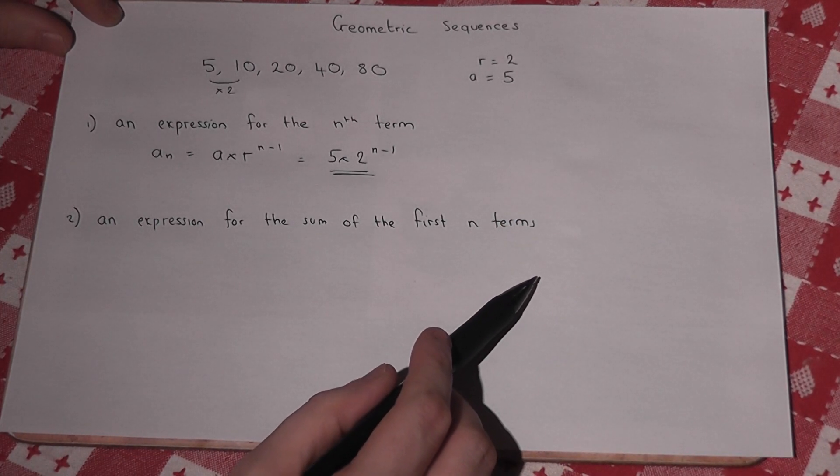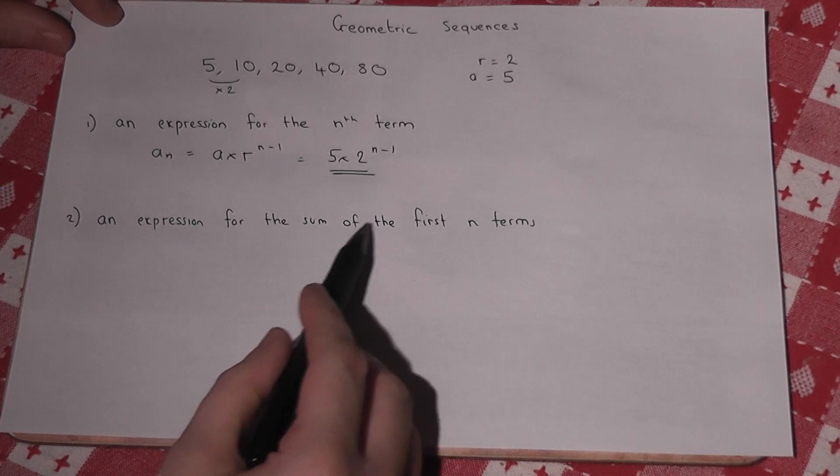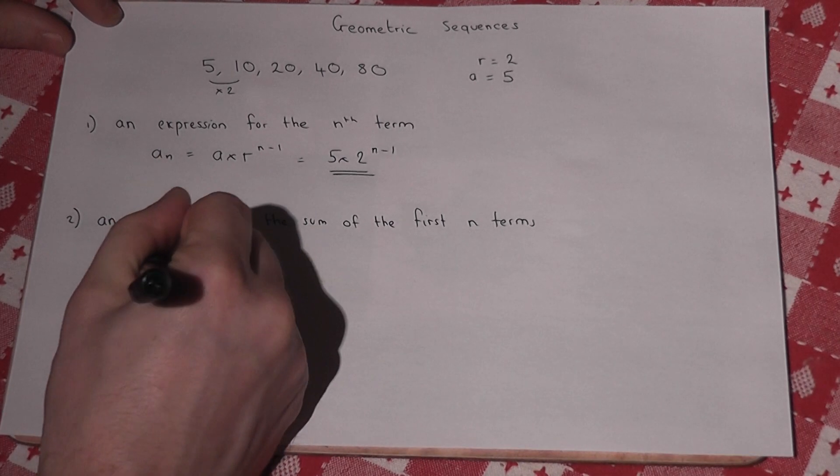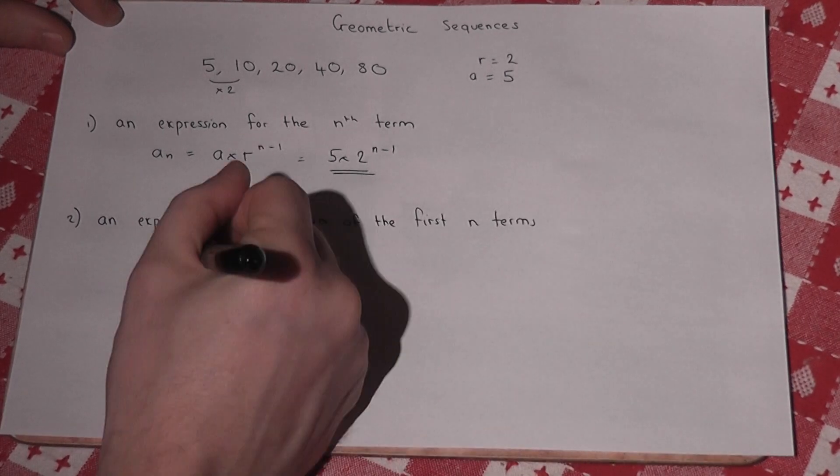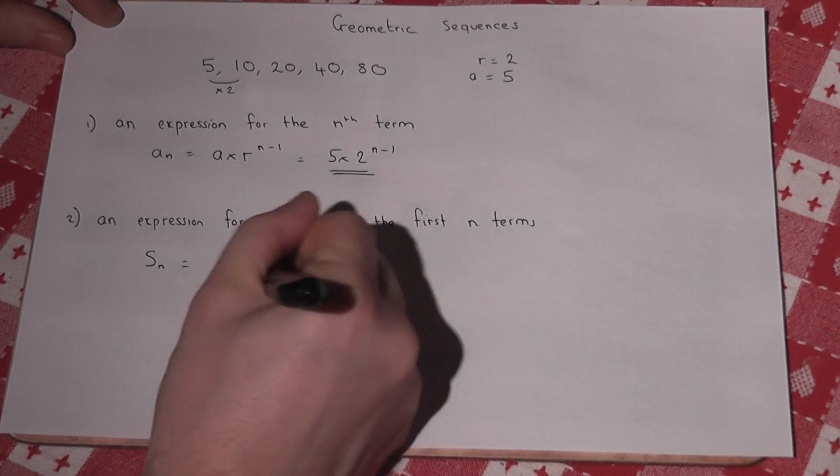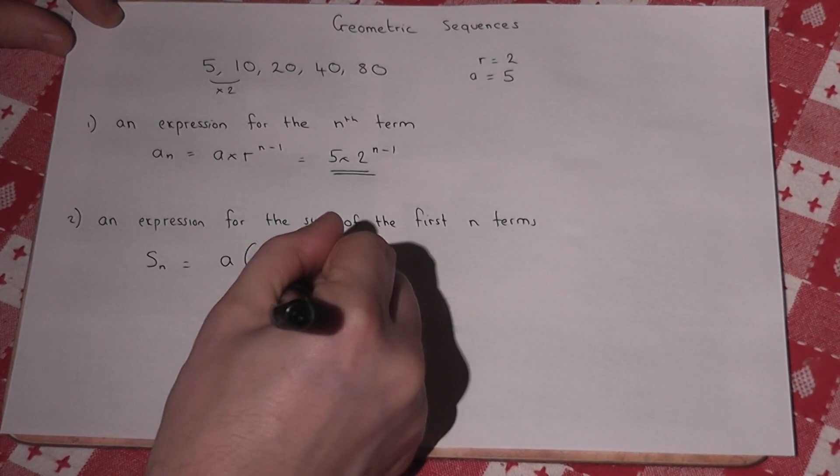Now in a similar way there's an expression for the sum of the first n terms. This formula is the sum of the first n terms equals a times r to the power of n minus 1, all over r minus 1.